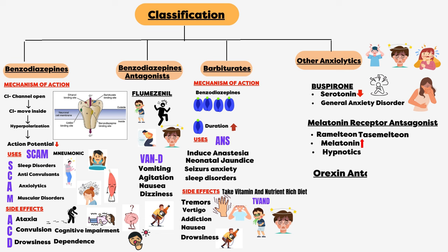In the fifth class we have orexin antagonists. Orexin is a peptide found in the hypothalamus and is involved in wakefulness, for example suvorexant. In the last class we have newer hypnotics, for example zolpidem and zaleplon.